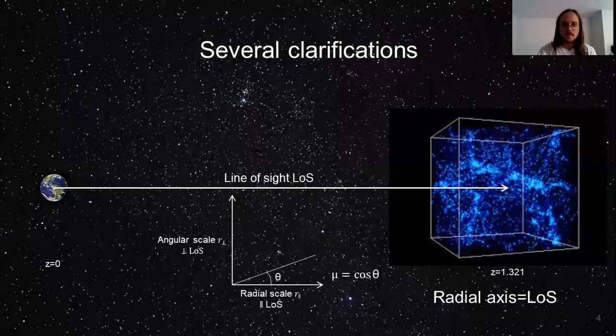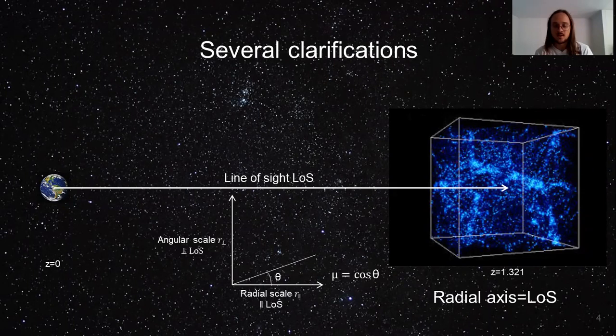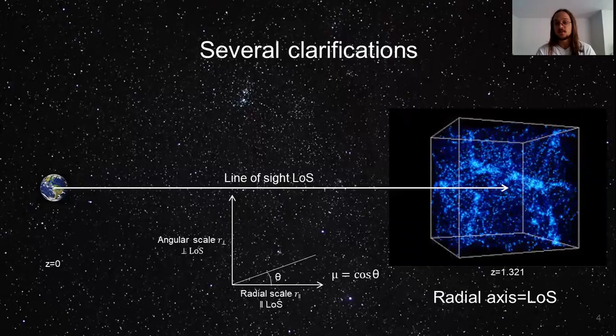And now, before continuing to the clustering section, I will explain again some concepts that will be useful from now on. When we talk about correlation functions, the radial scale will be the axis parallel to the line of sight, and the angular scale will be perpendicular. And this scheme can make sense taking the plane parallel approximation, since the source that we are searching for is far away.